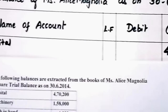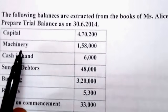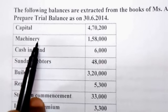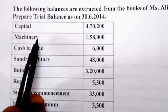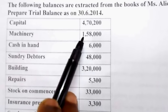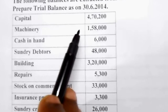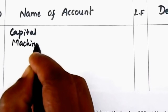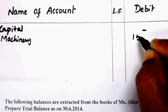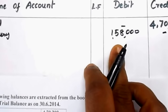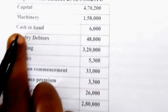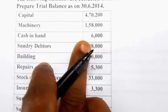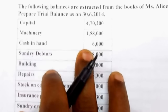Second item: machinery — 1,58,000. Machinery is an asset; all assets belong to real account. Real account rule is debit what comes in — when you purchase machinery, it comes in, so machinery is entered on the debit side. Third item: cash in hand — 6,000. Cash is also a real account asset, so enter 6,000 on the debit side.